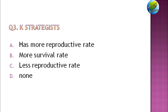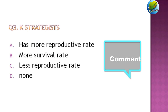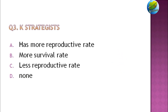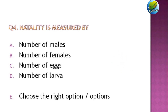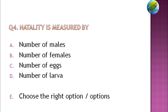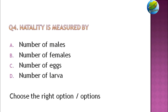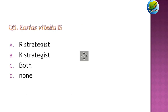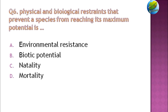Third: K-strategists have — more reproductive rate, more survival rate, less reproductive rate, or none of the above? Fourth: Natality is measured by — number of males, number of females, number of eggs, or number of larvae? Fifth: Areis vitella is — an R-strategist, K-strategist, both, or none? Sixth: Physical and biological restraints preventing a species from reaching its maximum potential is — environmental resistance, biotic potential, natality, or mortality?